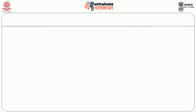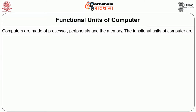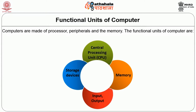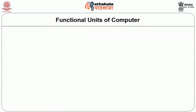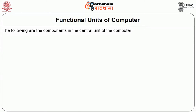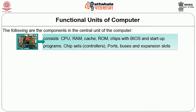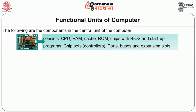Now let us look into the functional units of a computer. Computers are made of a processor, peripherals and memory. The functional units are: central processing unit (CPU), memory, input/output and storage devices. Components in the central unit include the motherboard, which consists of CPU, RAM, cache, ROM, chips with BIOS and startup program, chipsets (controllers), ports, buses and expansion slots.